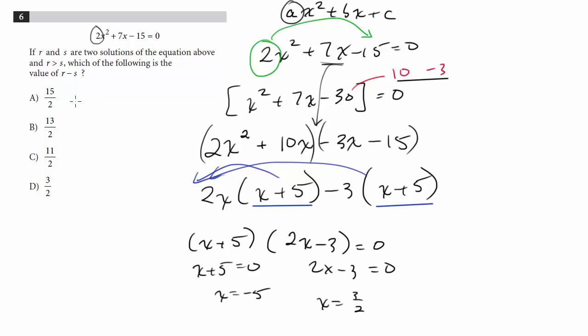Now, r is greater than s. So that means r is going to be 3 halves and s is going to be negative 5. And now we do 3 halves minus negative 5. So now it's the same thing as 3 halves plus 10 halves. So we get 13 halves. That's choice B.